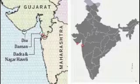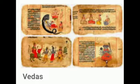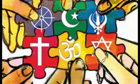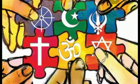Question 4: The people of Daman and Diu speak Gujarati. Question 5: The place of worship of Jews is Synagogue. Question 6: The language of Vedas is Sanskrit. Question 7: The biggest religious minority in India is that of Muslims. Question 8: The literacy rate among the religious communities is highest in Jains.